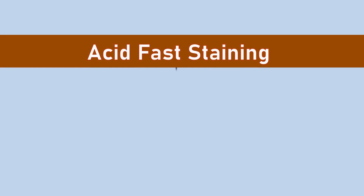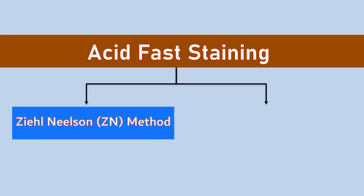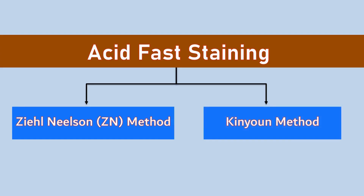Acid-fast staining can be done using two different methods. The first method is the Ziehl-Neelsen method, also known as Ziehl-Neelsen staining, and the second method is the Kinyoun method.